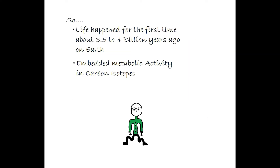The Earth formed around 4.5 billion years ago, and life really wouldn't take place until a couple hundred million years after, because at first primordial Earth was a very hostile environment for life. We know that life started between 3.5 and 4 billion years ago because, if we look towards the carbon isotopes found in Greenland, we can see clear metabolic imprints of activity of simple organisms and cells, which we can carbon date to about 3.8 billion years ago.